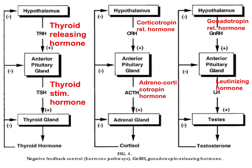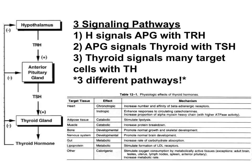Let's zoom in on the thyroid pathway to better understand what's happening. The pathway goes: hypothalamus → anterior pituitary → thyroid gland. First, the hypothalamus signals the anterior pituitary gland with TRH, thyroid-releasing hormone. Then the anterior pituitary gland responds to TRH by secreting TSH, thyroid-stimulating hormone. The TSH ligand travels through the blood to the thyroid gland, which is in your neck area. The thyroid gland then responds to TSH by releasing thyroid hormone into the blood. As shown in the table, thyroid hormone acts as a ligand for many target cells, causing diverse responses.